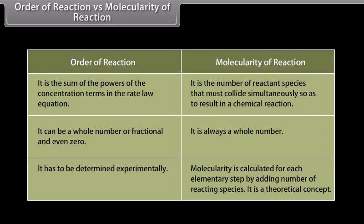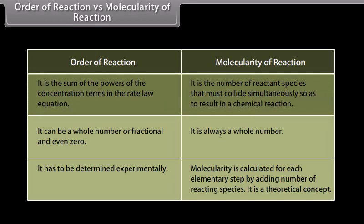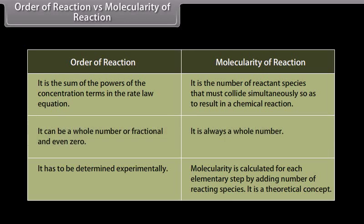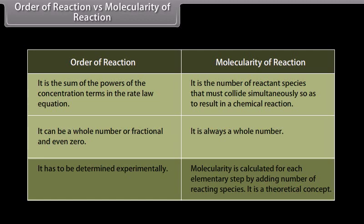The important differences between order of reaction and molecularity: order of reaction is the sum of the powers of concentration terms in the rate law equation, whereas molecularity is the number of reactant species that must collide simultaneously to result in a chemical reaction. Order of reaction can be a whole number, fractional, or even zero, whereas molecularity is always a whole number. Order of reaction must be determined experimentally, whereas molecularity is calculated for each elementary step by adding the number of reacting species — it is a theoretical concept.